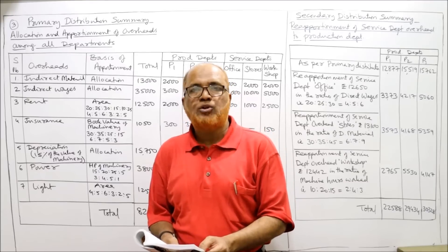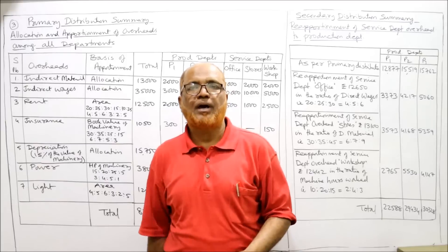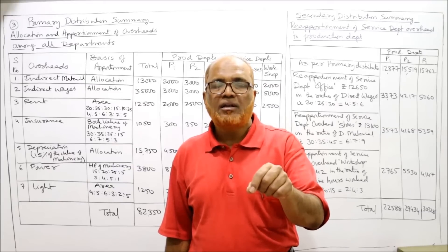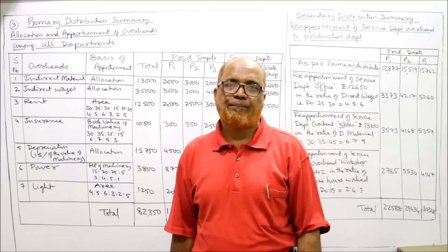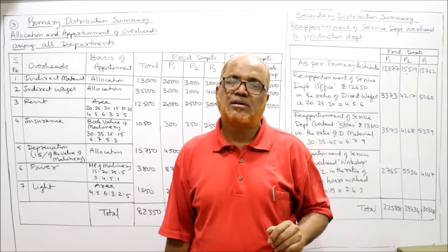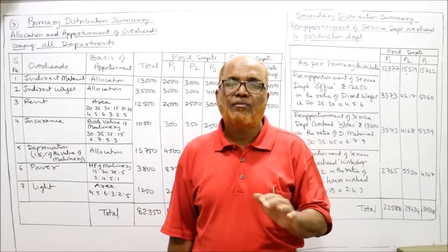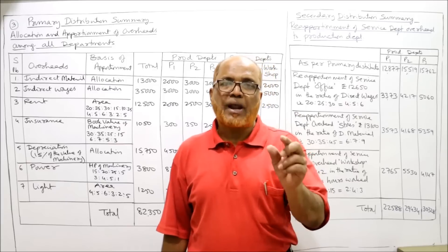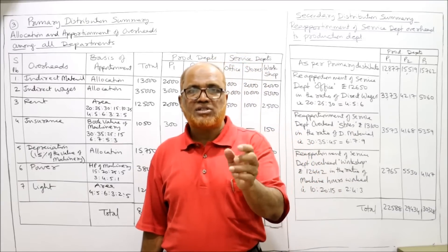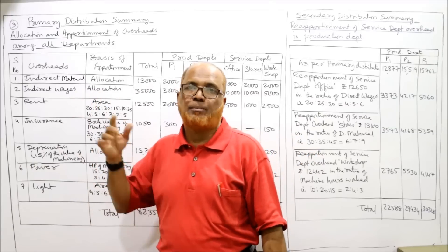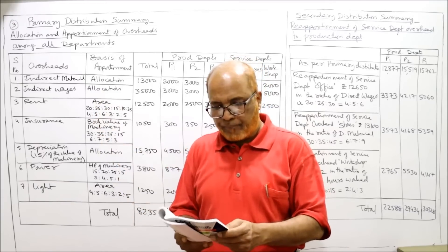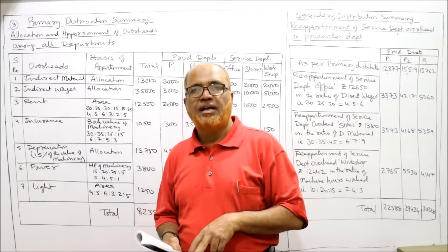Direct wages and direct material are given for P1, P2, P3. Remember: when we make the overhead summary we take only overheads — expenditure over and above prime cost. Prime cost consists of direct material, direct wages, and direct expenses. So direct material and direct wages of the production departments should not be included in the overhead summary.